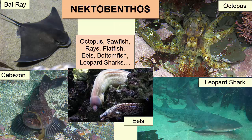What about organisms that live mostly on the bottom but that can also swim? Like octopus, sawfish, rays, and flatfish. We call these organisms nectobenthos.